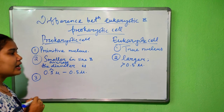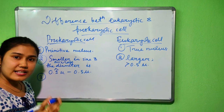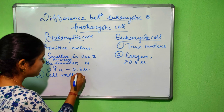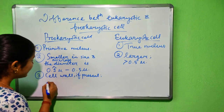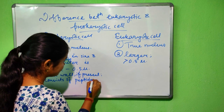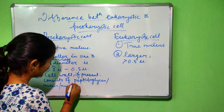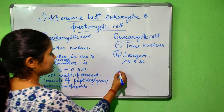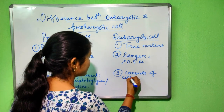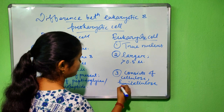The third point is regarding the cell wall. We know that plant cells contain a cell wall but it is absent in animal cells. In prokaryotic cells, if a cell wall is present, it consists of peptidoglycan, also called murein or mucopeptide. But in eukaryotic cells, if a cell wall is present, it consists of cellulose, hemicellulose, etc.